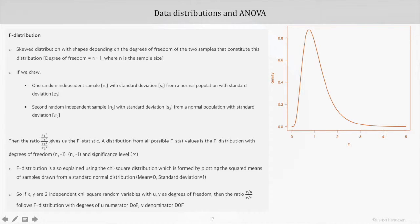This distribution is formed by drawing two random and independent samples from two different normal populations. Let's say the size of the samples that we are drawing is N1 and N2. The sample standard deviation is S1 and S2, and the standard deviation of the population from where these samples have been drawn is sigma1 and sigma2. Then the ratio S1 square to sigma1 square divided by S2 square to sigma2 square gives us F statistic, and a distribution from all possible F stat values is the F distribution with degrees of freedom N1 minus 1 and N2 minus 1 at a significance level of alpha.